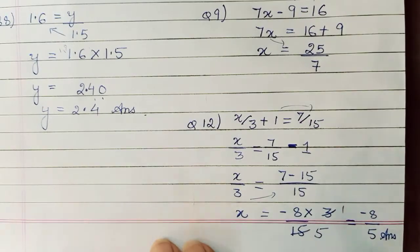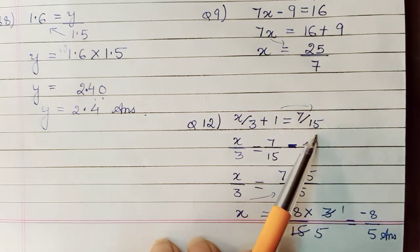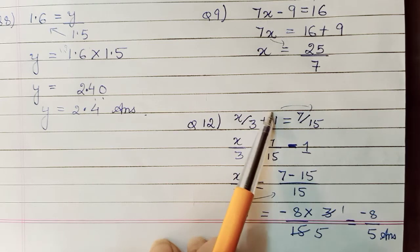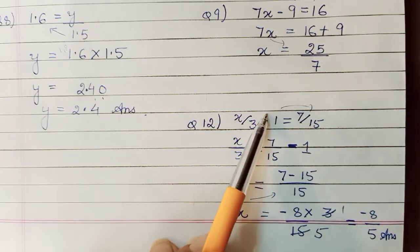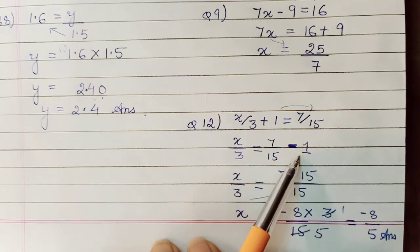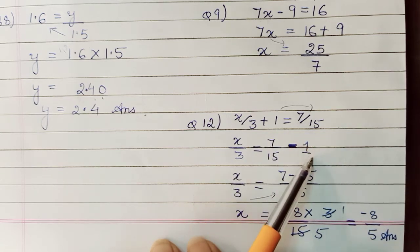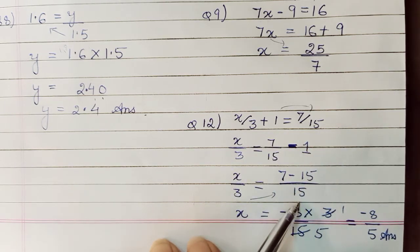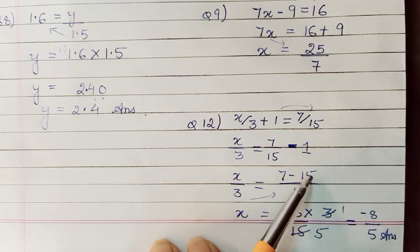Then this is your twelfth example in which you had fractions. But no worries. x upon 3 plus 1 equals 7 upon 15. So as I said, first plus minus operations I will deal with. And then we will come to into and division. So 1 I will take to the other side. Or we will subtract 1. So 7 upon 15 minus 1. Now if I want to proceed with this, I need to take LCM naturally. So 15 is your LCM. So this becomes 7 minus 15.